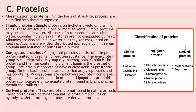Classification of proteins on the basis of structure: proteins are classified into three categories — simple, conjugate, and derived. Simple proteins on hydrolysis yield only amino acids, and they are soluble in one or more solvents.